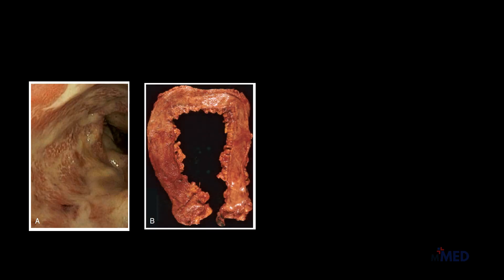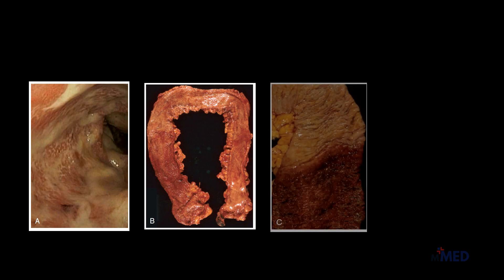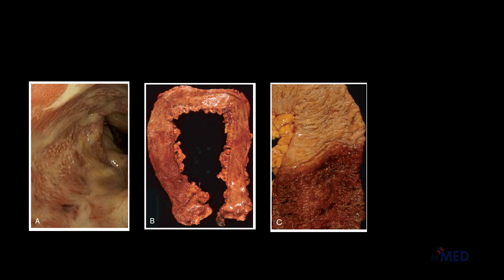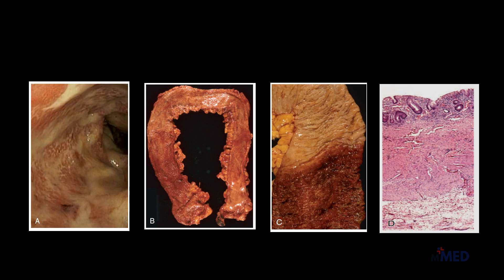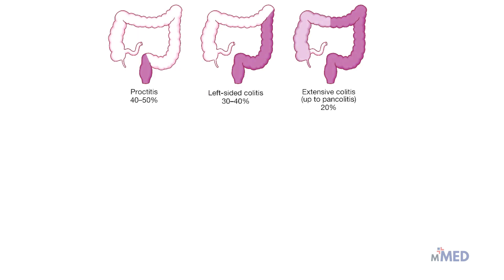In figure A we have an endoscopic view of ulcerative colitis with ulceration. Figure B shows a complete colectomy with active disease and red granular mucosa in the cecum. Figure C shows a sharp demarcation between active ulcerative colitis at the bottom and normal mucosa at the top. Figure D is a full-thickness histologic section showing that ulcerative colitis is limited to the mucosa only.